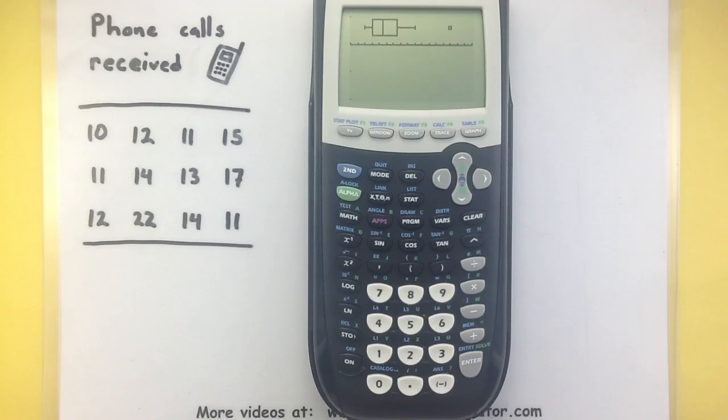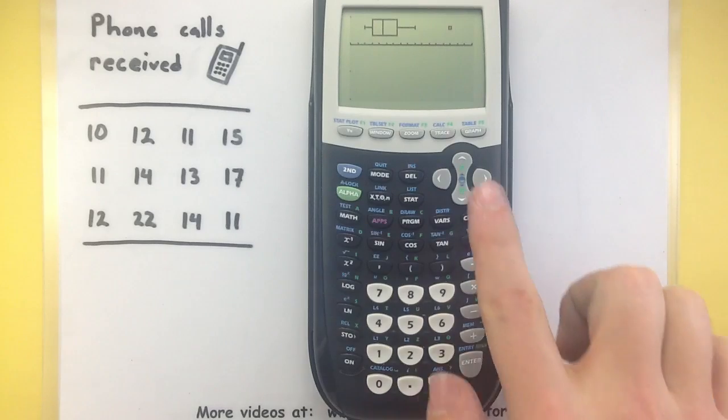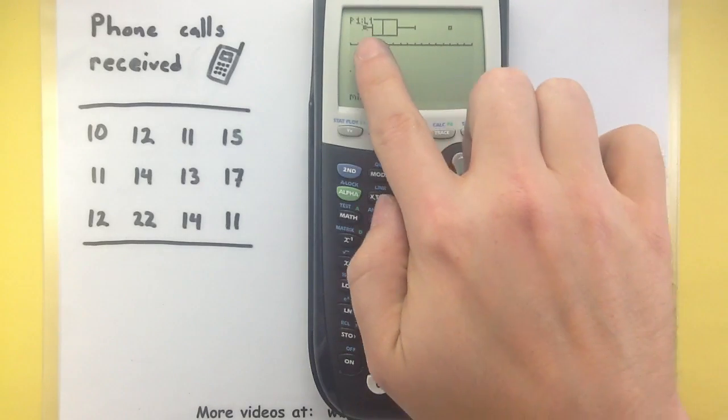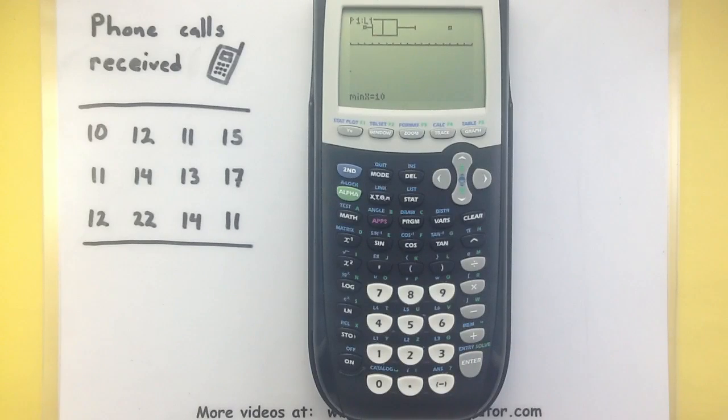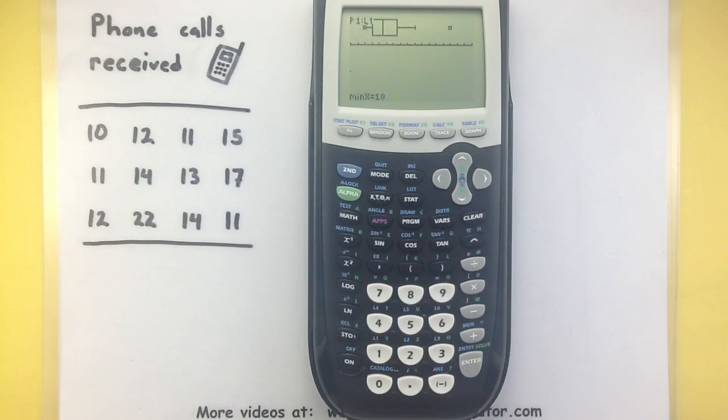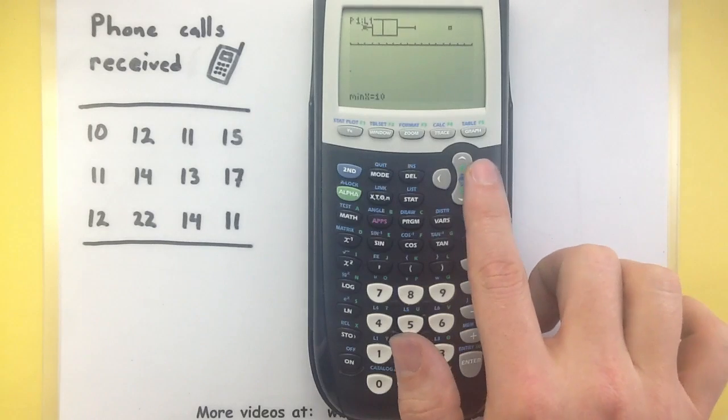Now, usually the calculator doesn't mark out the different values on your box and whisker. But you can find them by pressing your trace button. So now a little bullseye has shown up on the end and it says my minimum value is 10. You can use your arrow keys to scroll through all of the other key values on the box and whisker plot.